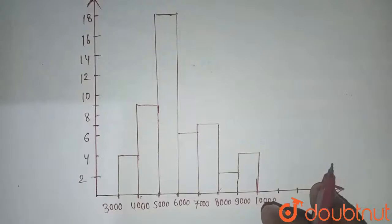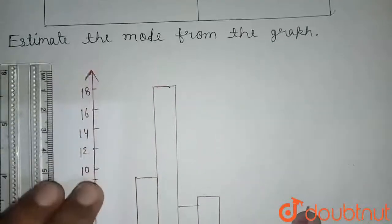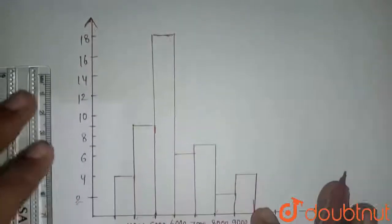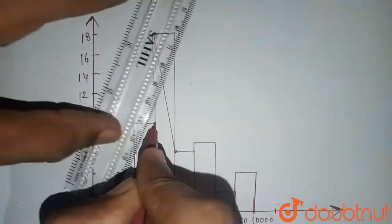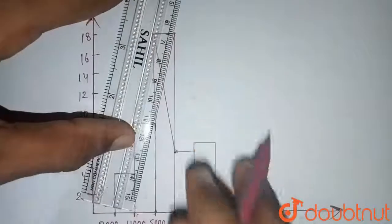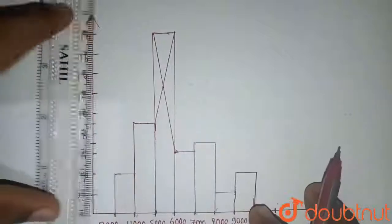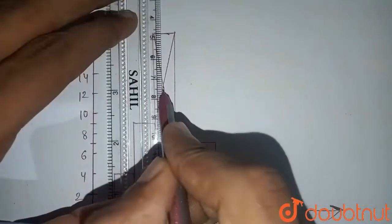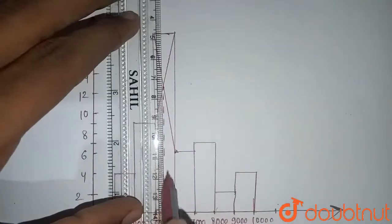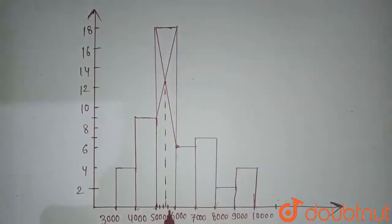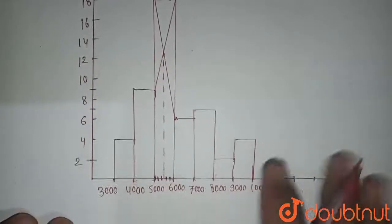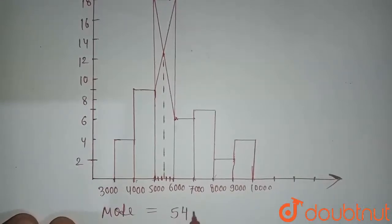The histogram for the given data is now complete. To find the mode, we identify the tallest bar, which has the highest frequency of 18 in the interval five thousand to six thousand. We join the top corners of adjacent bars to form crossing diagonal lines; their intersection point gives the mode. Reading from the graph, the mode is approximately 5450.